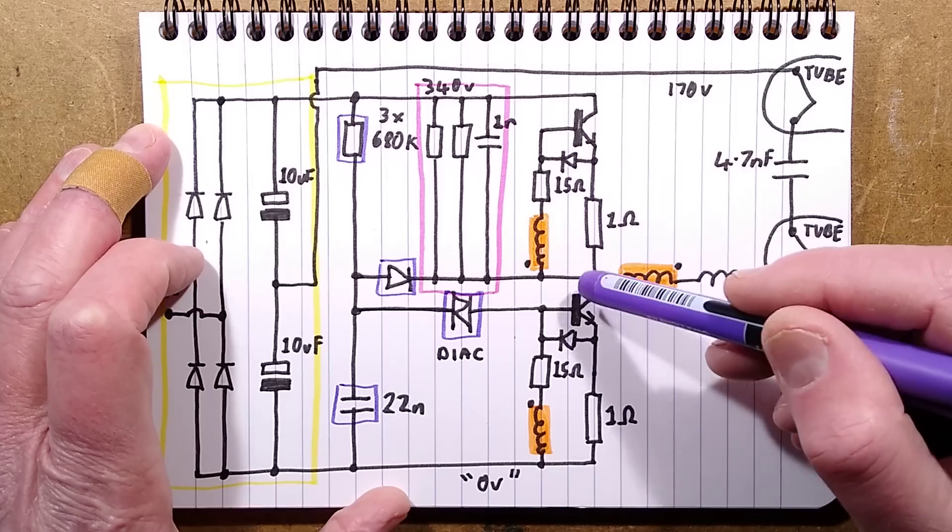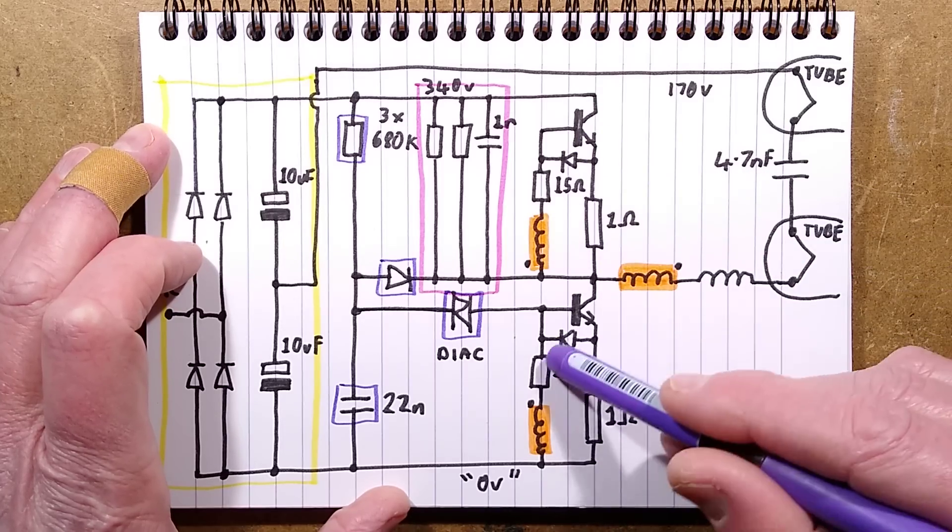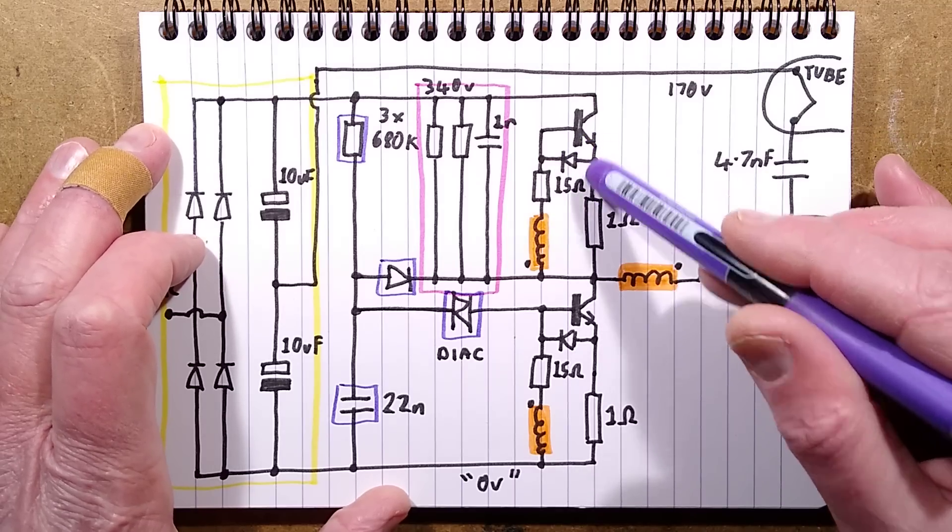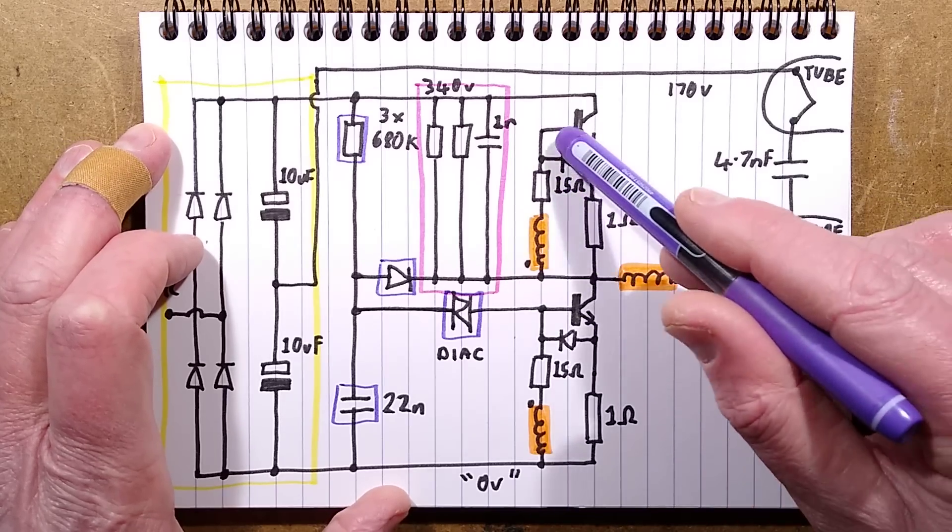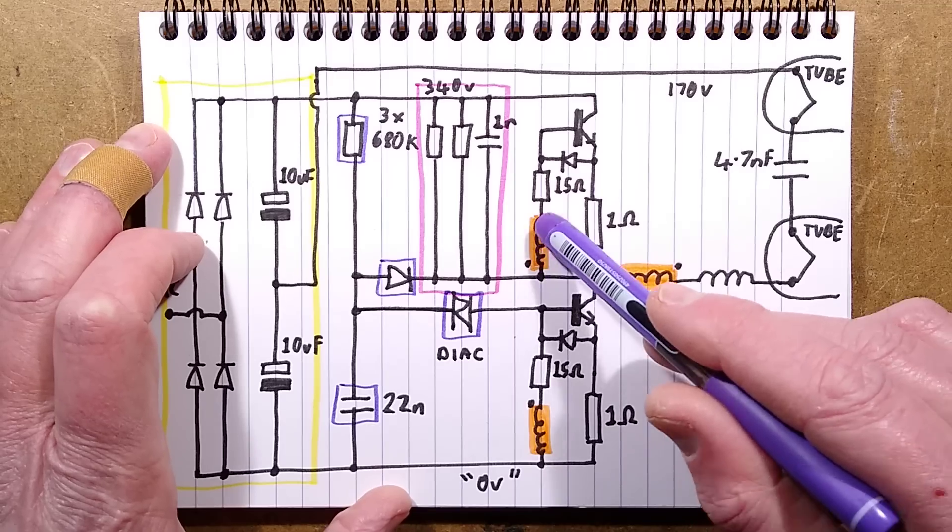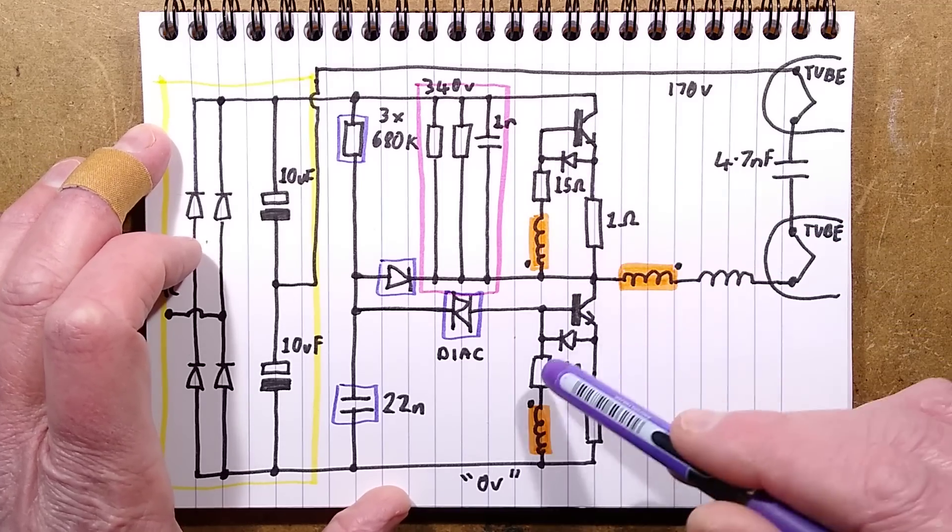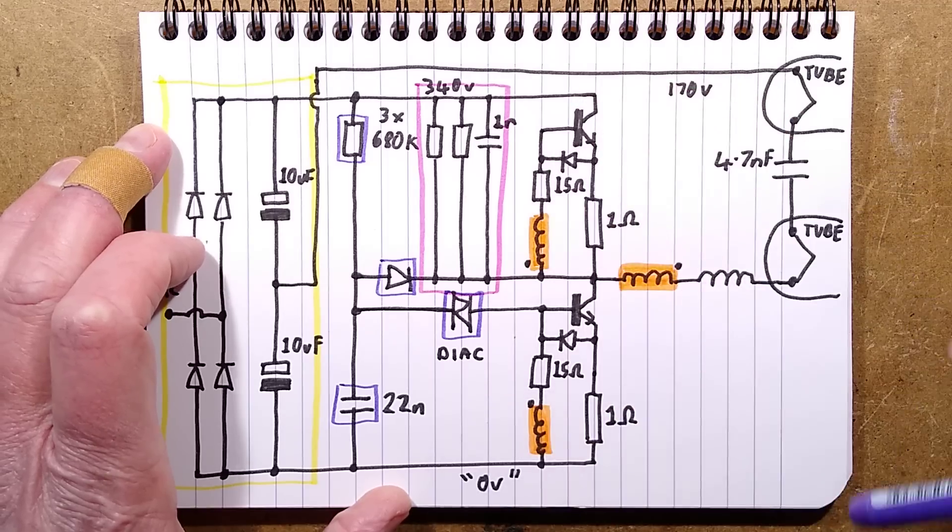These transistors are both NPN. Normally you'd expect an NPN to be switching to the 0 volt rail like this one is, but ultimately because they're not relying on an emitter reference to 0 volts, they've effectively got a closed circuit here with this little coil. So the coil itself, the little transformer winding is actually powering the transistor directly so they could be treated as almost like isolated sections of circuitry.